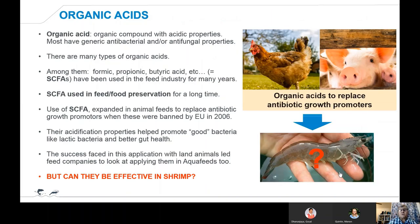So what tools do we have to fight those bacteria? Apart from antibiotics, organic acids have been looked at and found to be, to a certain extent, effective. They are organic compounds with acidic properties which often have antibacterial and/or antifungal properties. Among the many types of organic acids, you'll find formic acid, propionic acid, and butyric acid, which are short-chain fatty acids that have been used in the feed industry for many years, especially in feed and food preservation. Their use expanded in animal feeds to replace antibiotic growth promoters when these were banned by the EU in 2006.